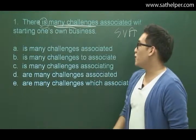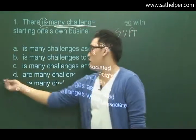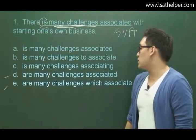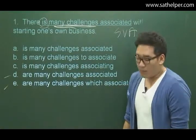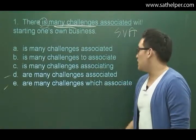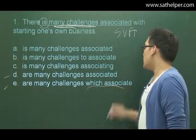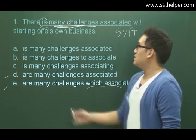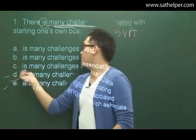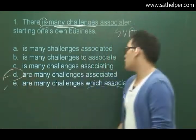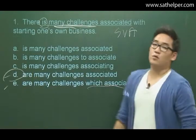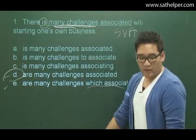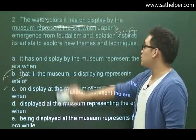That's why it should be either D or E — you should automatically be able to see that. However, E has 'which associate,' which we don't need. It should be just D: 'Are many challenges associated with starting one's own business.' Let's move on to question number two.